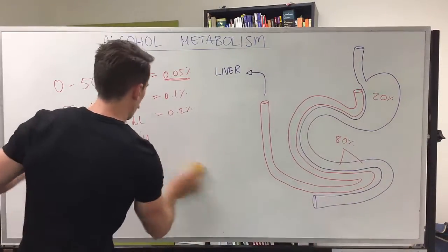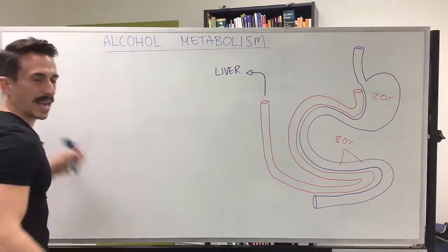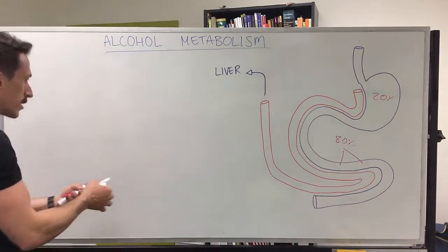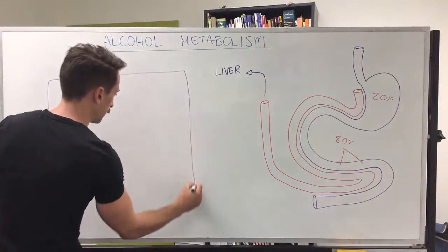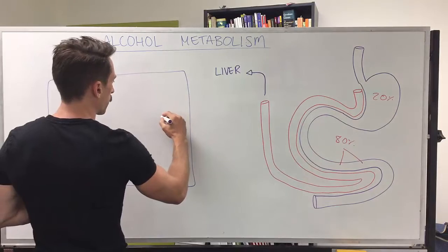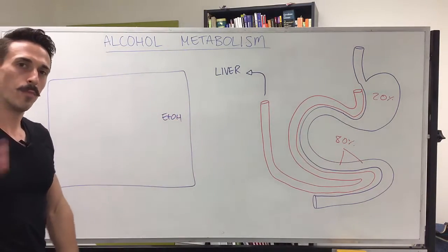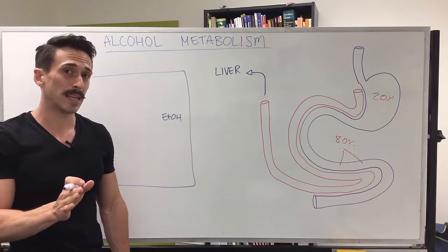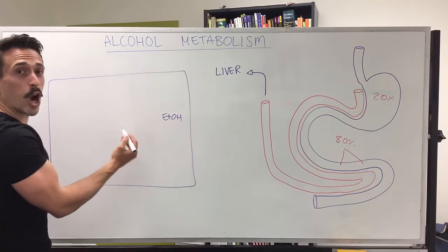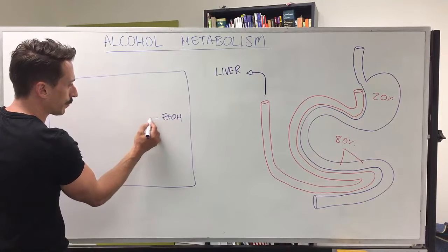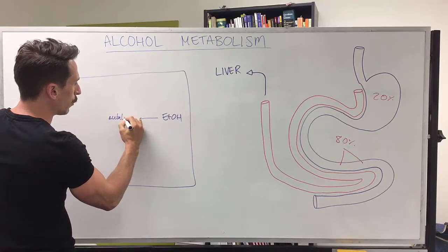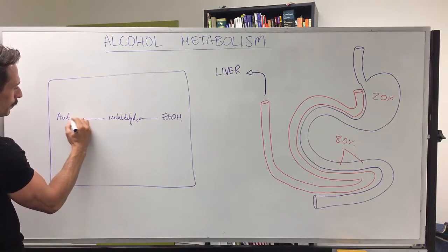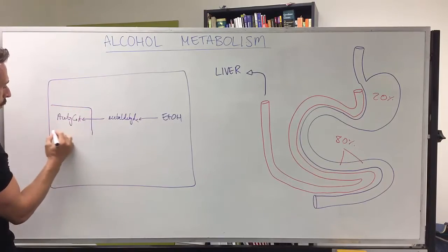When we drink alcohol, it goes into our portal vein, travels to the liver, and jumps into hepatocytes — liver cells. The major metabolic process, accounting for greater than 80% of ethanol metabolism, is through the alcohol dehydrogenase metabolic system. This turns ethanol into acetaldehyde, and then acetaldehyde ultimately into acetyl-CoA. The conversion to acetyl-CoA is happening in the mitochondria.